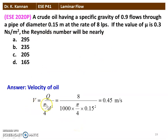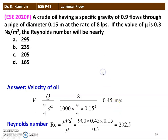First we calculate velocity: V = Q/A = (8/1000) ÷ (π/4 × 0.15²) = 0.45 m/s. The Reynolds number Re = ρVD/μ = 900 × 0.45 × 0.15 ÷ 0.3 = 202.5. The nearest correct answer is 205.